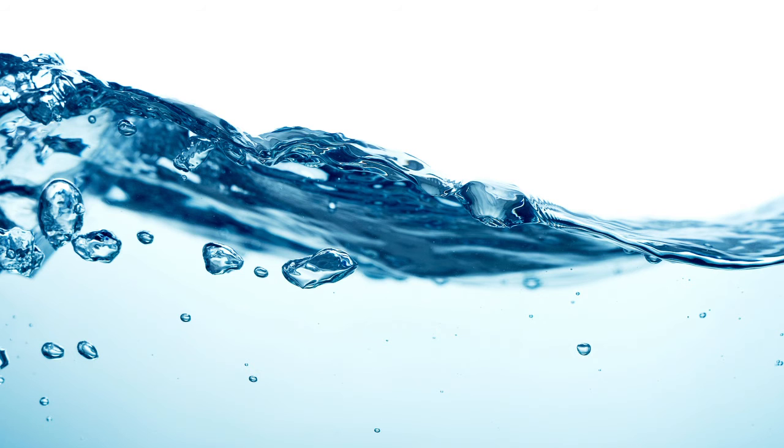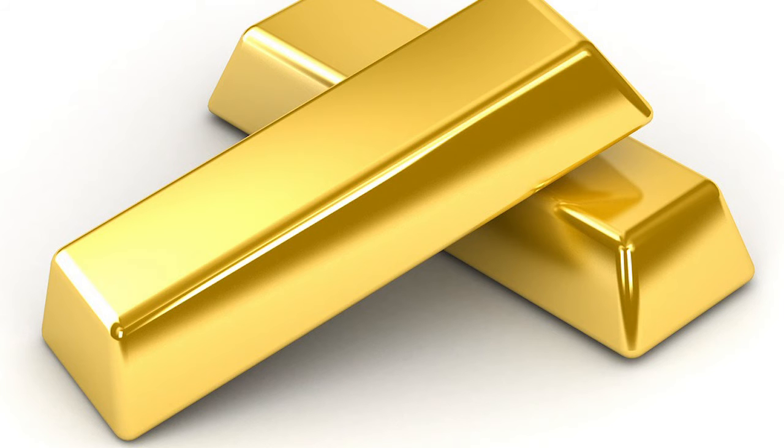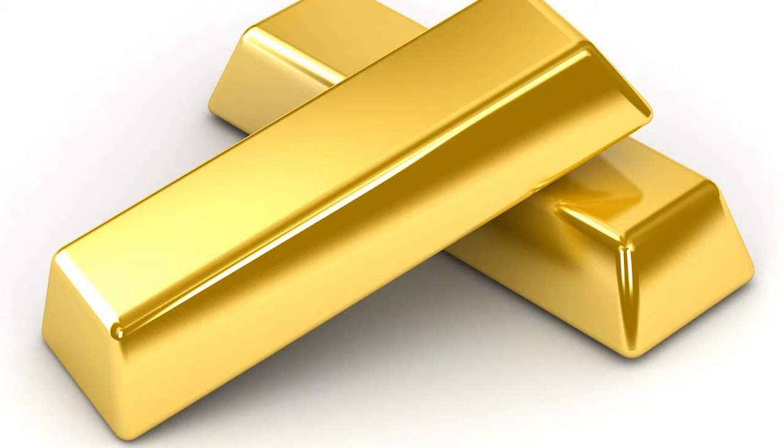All materials including water and gold are diamagnetic substances. So diamagnetic substances are essentially materials that oppose an external magnetic field when there is a strong magnetic field applied to them. The frog acts like a diamagnetic material, opposes the magnetic field and hence levitates.